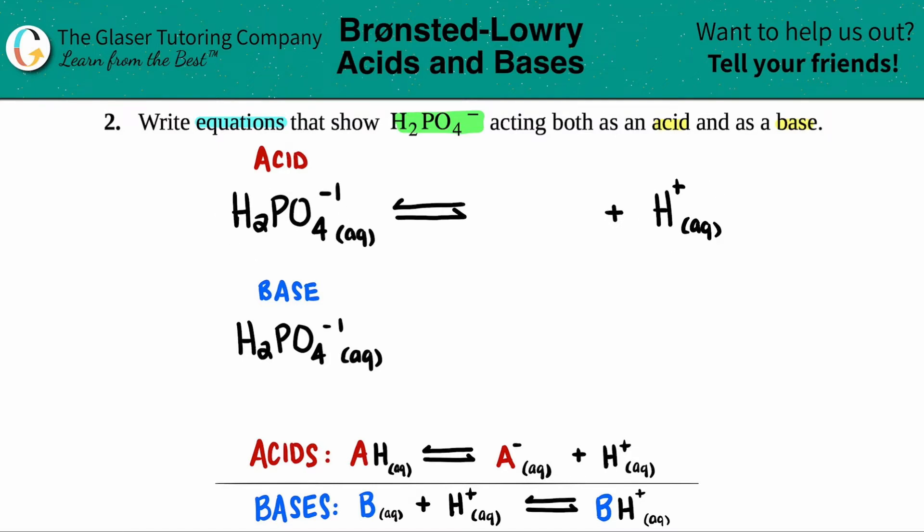Now, how many H's are left? Well, if it had two and acids always lose, maybe I'll write that in red over here. So what's happening is you're going to lose one H. So it started off with H2, but now it only has one H. So it would just be HPO4.